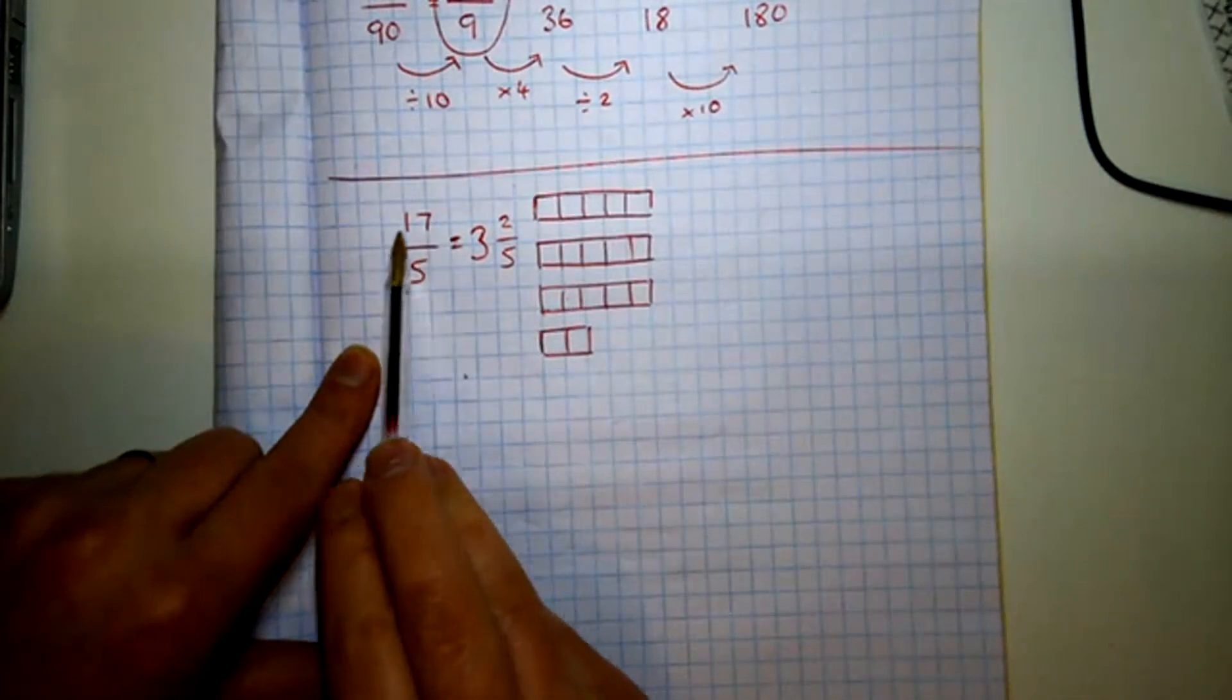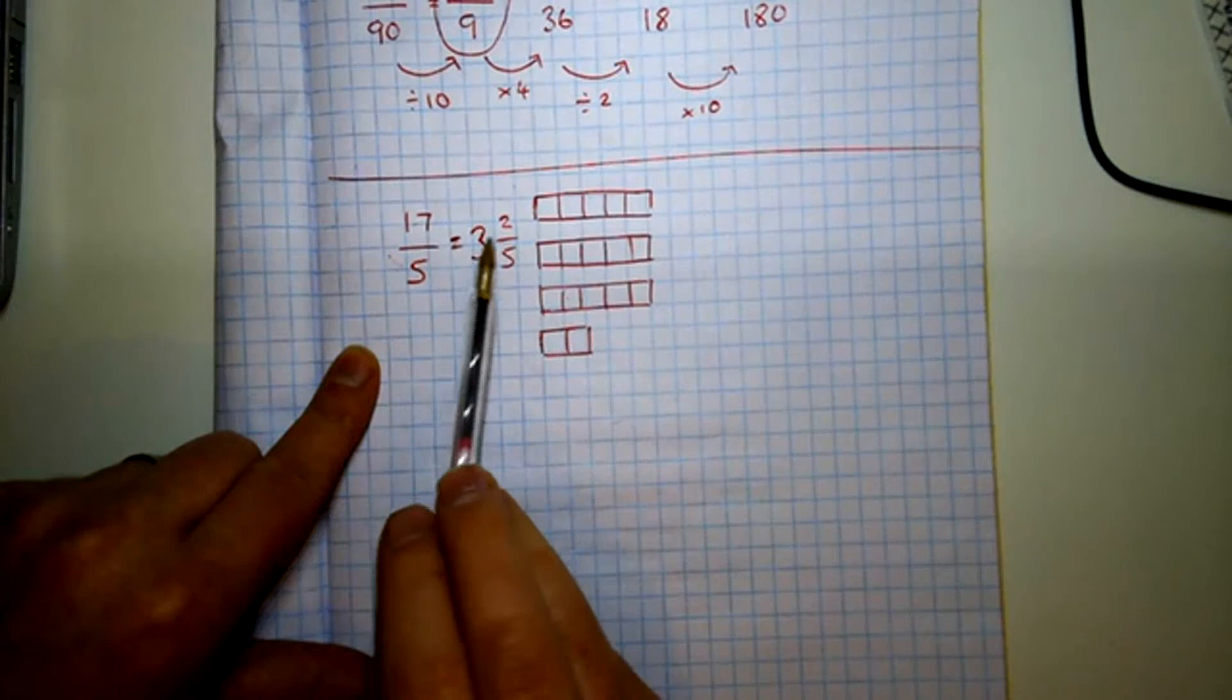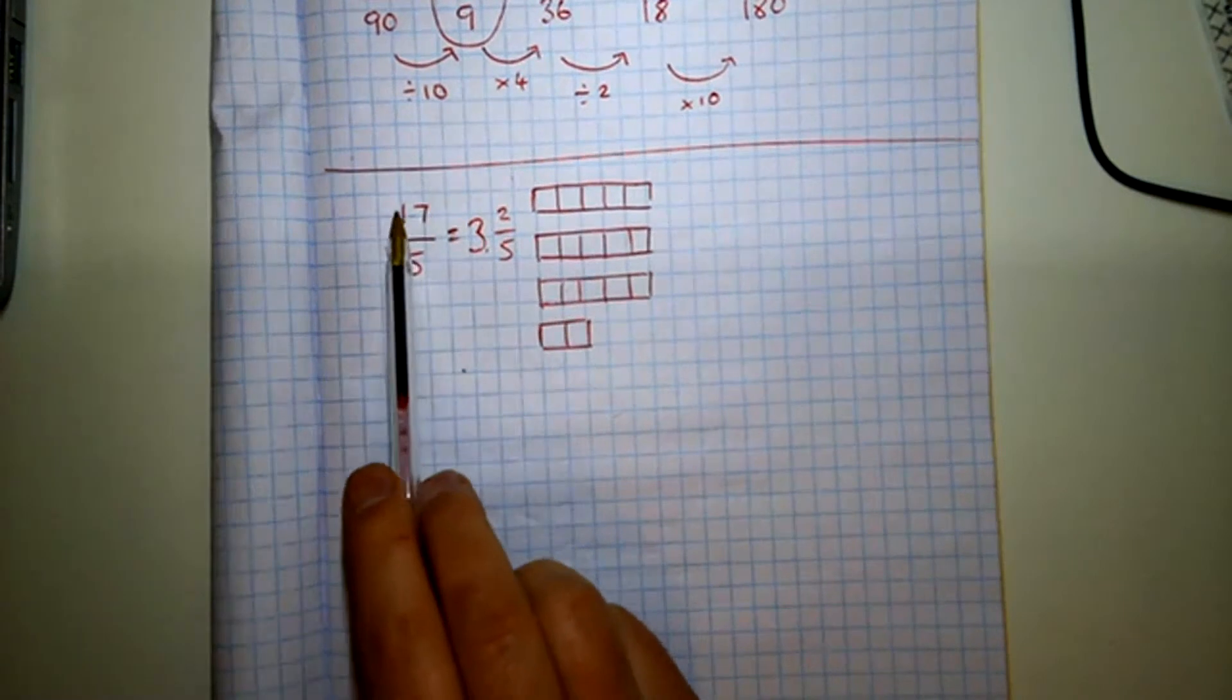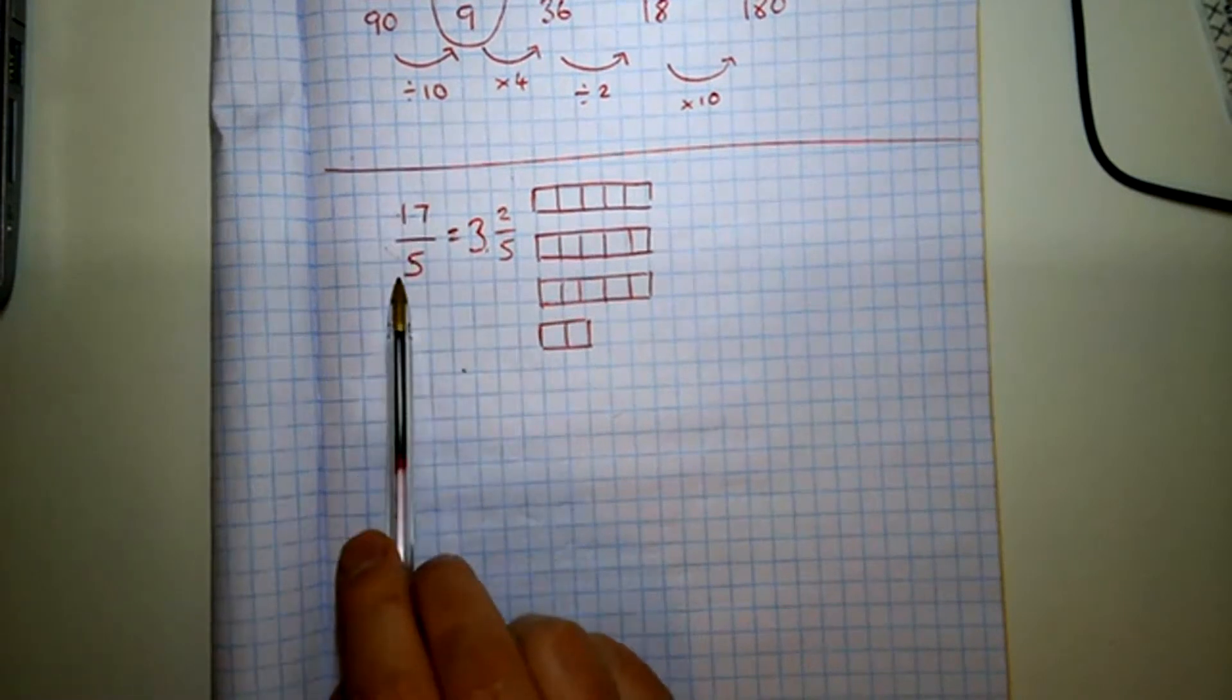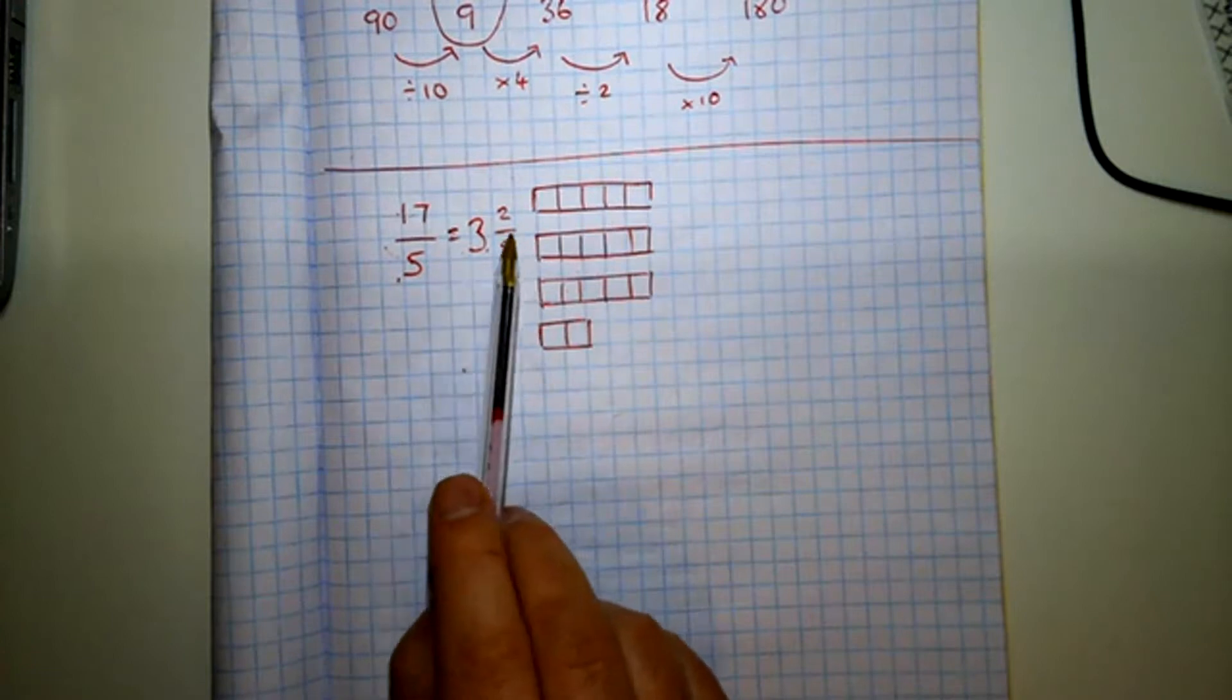All right, so this is an improper fraction and this is a mixed number. Improper fraction is where the numerator is bigger than the denominator and a mixed number is when you've got partly whole numbers and partly fractions.